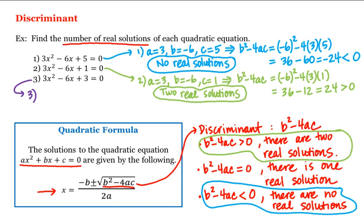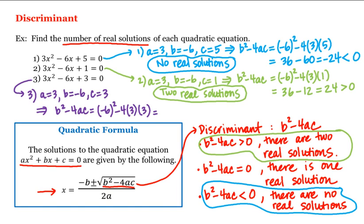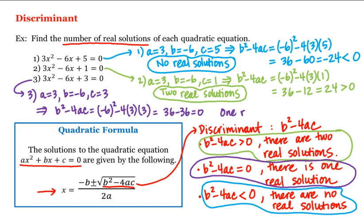For the last equation, a = 3, b = −6, and c = 3. The discriminant b²−4ac = (−6)² − 4(3)(3) = 36 − 36 = 0. Therefore we're in the second case, which means our third equation has one real solution. So the discriminant helps us determine how many real solutions we have to a given quadratic equation.